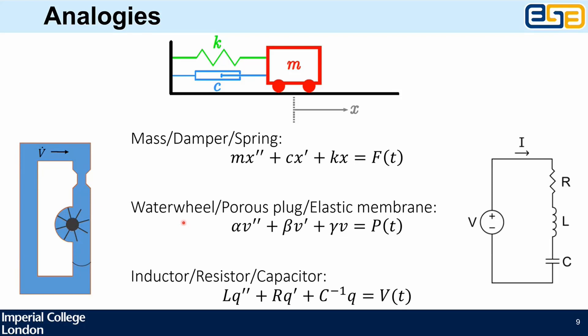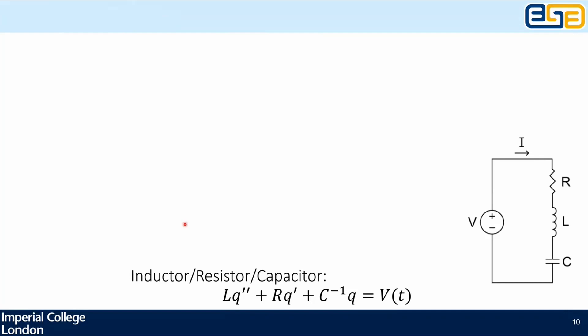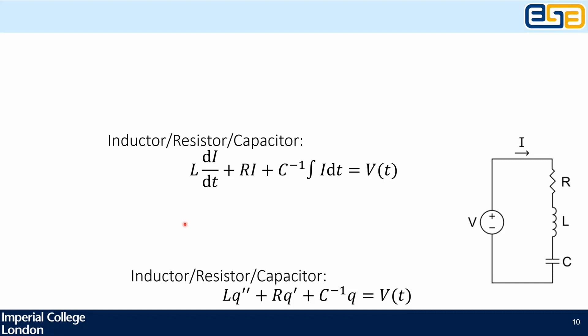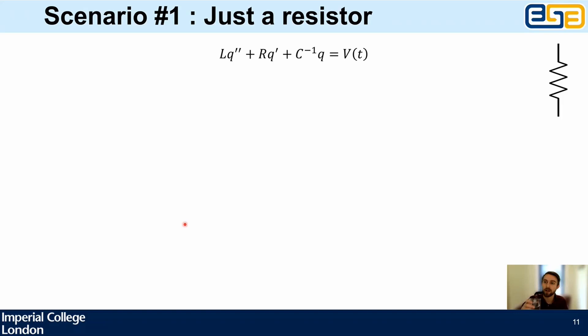Let's reframe back to something more familiar — forget about displaced charge q and think about current. All I'm doing is replacing q prime with i, q double-prime with di/dt, and q with the integral of i with respect to t. This substitution is going to be quite important in making a convenient description of our model.